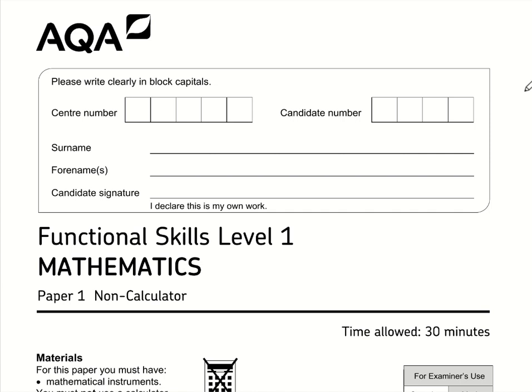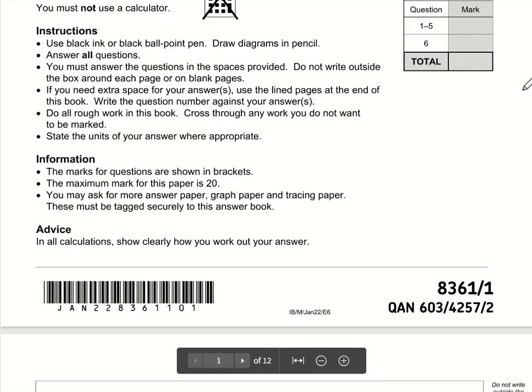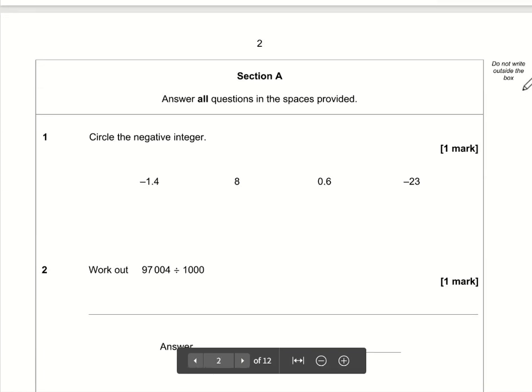Here are the video solutions for AQA Functional Skills Maths Level One. This is Paper One, which is the non-calculator paper, and this is January 2022. Question number one in Section A: circle the negative integer.